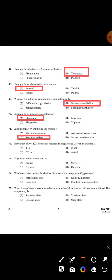Next question: How much of 10% potassium chloride solution is required to prepare 1 liter of 4% solution? The answer is Option D, 400 ml.